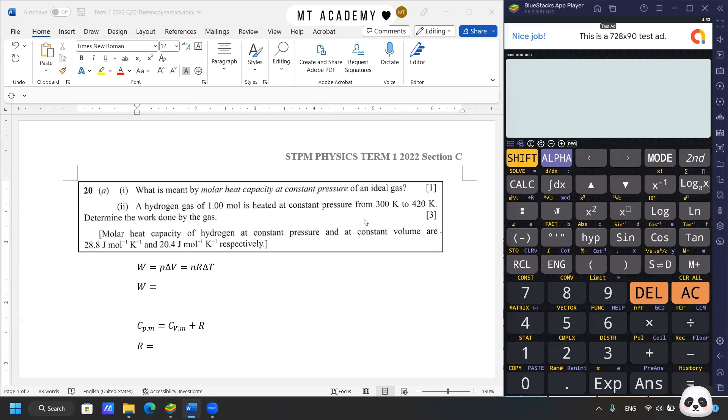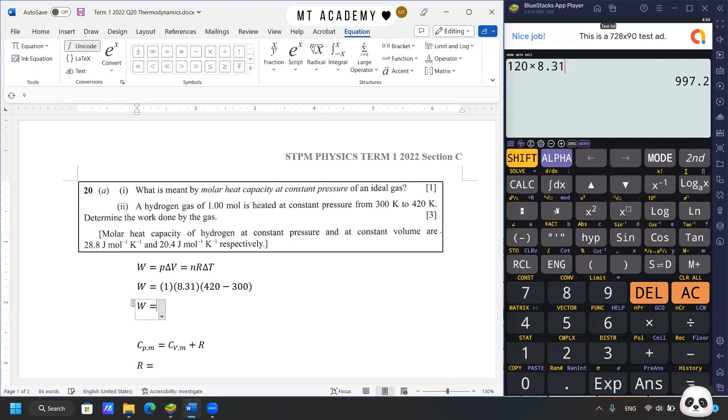Hydrogen gas of 1 mole is heated at constant pressure from 300 Kelvin to 420 Kelvin. Determine the work done by the gas. We learned that work done under constant pressure is P∆V, or we can use NR∆T since only temperatures are given. We have number of moles as 1, gas constant 8.31, and change in temperature from 300 to 420, so 120 times 8.31. The answer would be 997.2 joules.